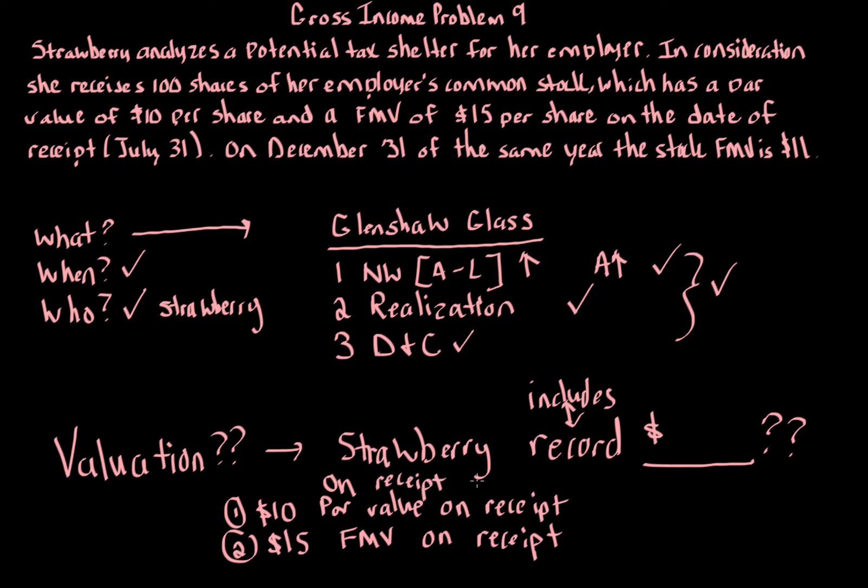That date is on July 31st, on receipt. The third option, because the par value stays the same at $10, is the end of the year when it goes down in value. December 31st, which is still within the same tax year, we're dealing with a fair market value of $11 at the end of the year. So the question becomes, do we use $10, $15, or $11?